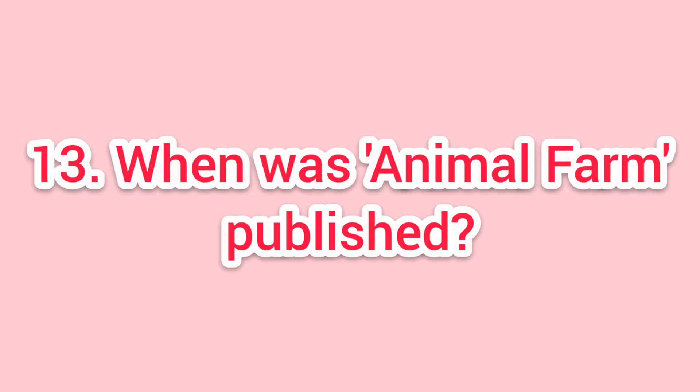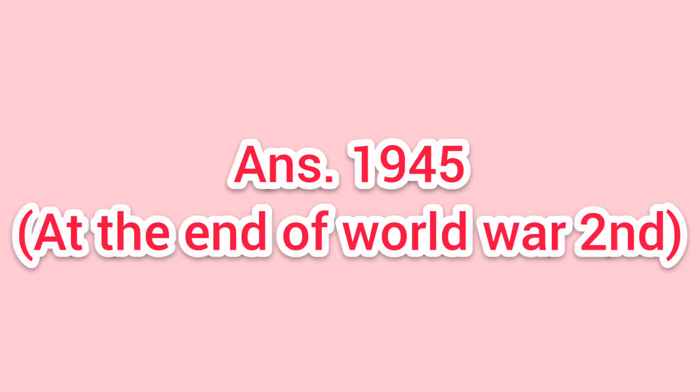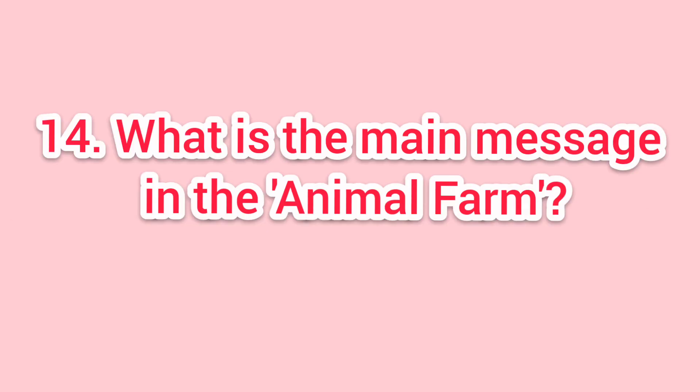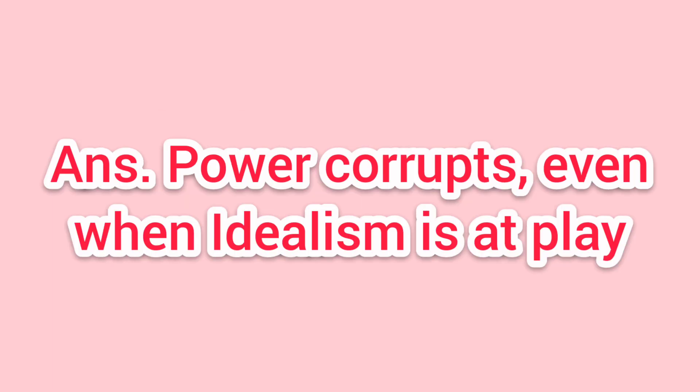Thirteenth question: when was Animal Farm published? Answer: 1945, at the end of World War II. Fourteenth question: what is the main message in Animal Farm? Answer: Power corrupts, even when idealism is at play.